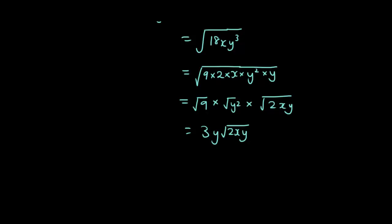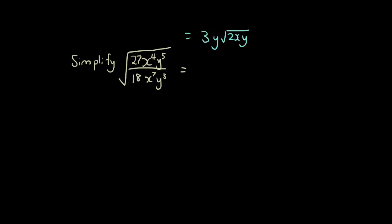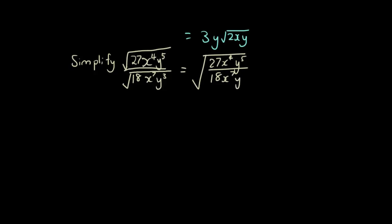I'll give you a more complicated one to do. Have a go at this one and come back when you're done. So the first step is combining the two separate square roots into one: the square root of 27x⁴y⁵ over 18x⁷y³.